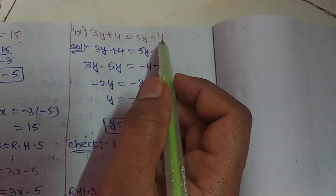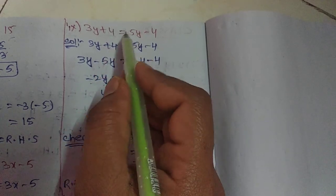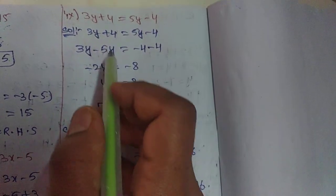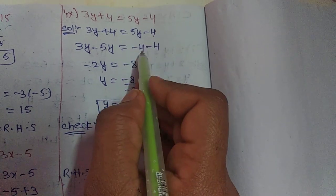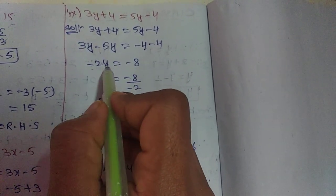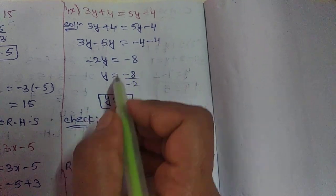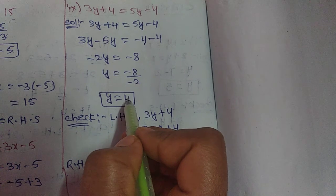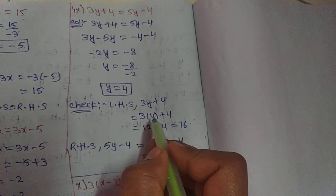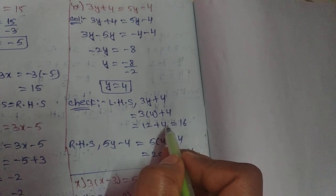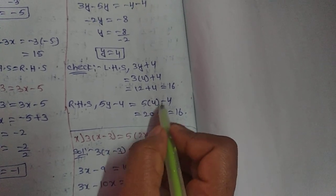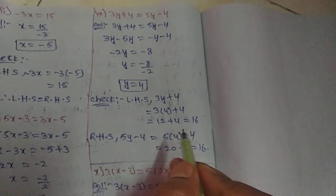Ninth one: 3y plus 4 equals 5y minus 4. Transpose 5y to the left as minus 5y, and transpose plus 4 to the right as minus 4. So 3y minus 5y equals minus 2y, and minus 4 minus 4 equals minus 8. So y equals minus 8 by minus 2, which is 4. Checking LHS: 3 into 4 plus 4 equals 12 plus 4 equals 16. Checking RHS: 5 into 4 minus 4 equals 20 minus 4 equals 16. So LHS equals RHS.